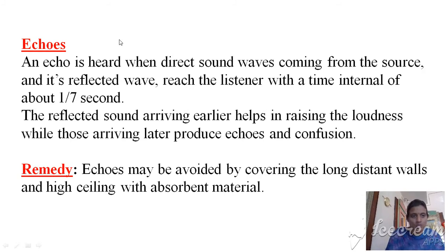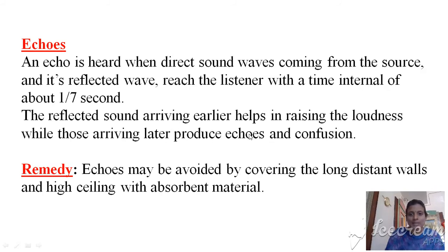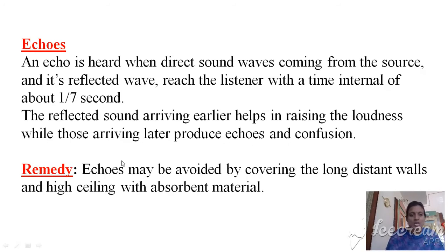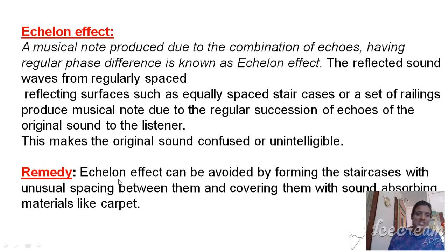The next factor which affects the acoustics of buildings is echo. Echo is heard when directed sound waves from a surface and their reflected waves reach the listener at an interval of about one-seventh of a second. If a spoken sound gets repeated several times, that is called echo. The reflected sound arriving earlier helps raise the loudness, while those arriving later produce echoes and confusion. The remedy is to provide long-distance walls and high ceilings with absorbing materials inside the room.